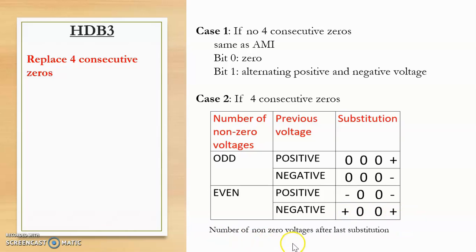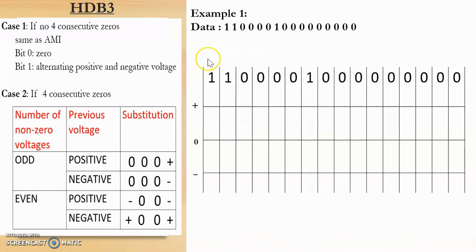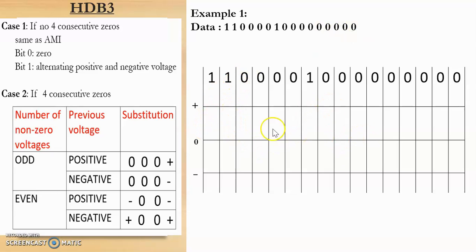Also, if there are more than one substitution, we need to count the number of non-zero voltages after the last substitution. Let us consider an example: suppose we are given the data as 1, 1, then 4 zeros, then 1, and then 9 consecutive zeros. We need to convert it into a digital signal using the HDB3 technique.